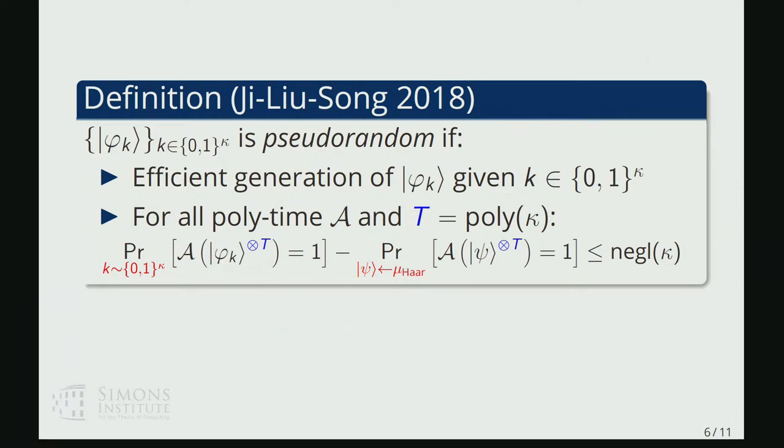And a very well-known example of this may be kind of the first that was introduced recently was in this paper by Ji, Liu and Song in 2018 of what are called pseudorandom quantum states.